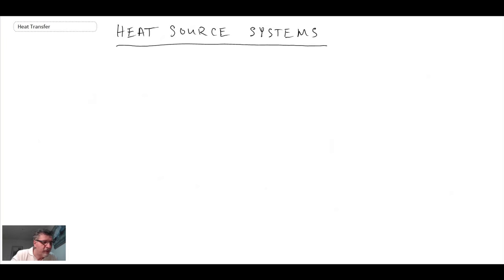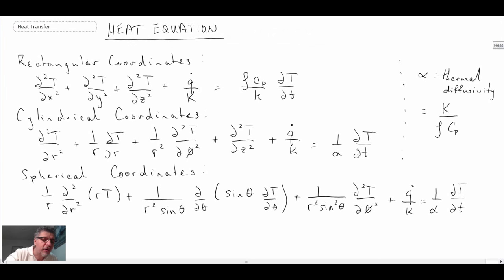When we have heat source systems, looking back at our equation, the place where we have the heat generation is the Q dot over K term.